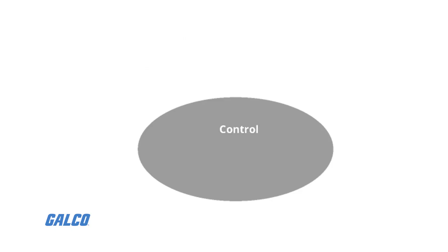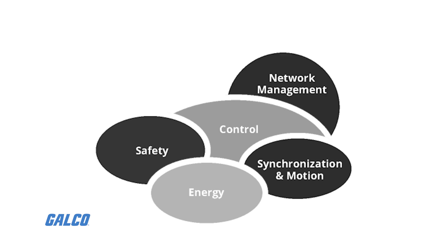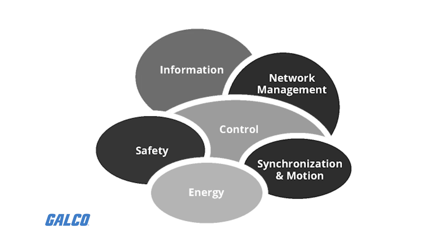The Common Industrial Protocol, or CIP, is an open industrial protocol supported by ODVA. The CIP includes a set of messages and services that apply to control, safety, synchronization, movement, configuration, and information applications across the automation industry.